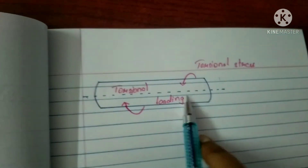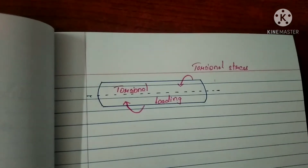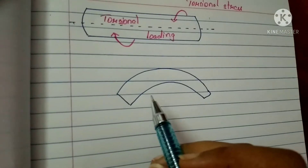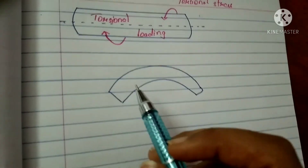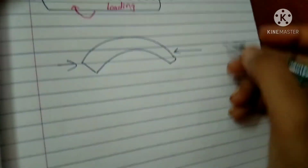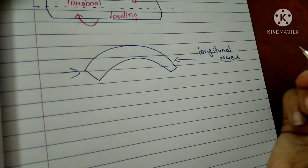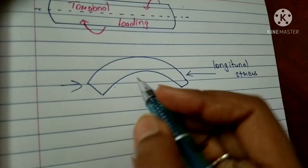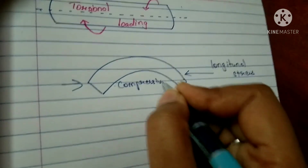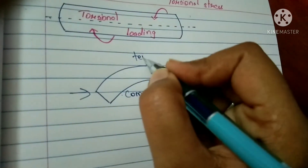When the stress is acting perpendicular to the long axis of the material, it creates torsional loading, and this stress is called torsional stress. Regarding how stress acts on a curved object such as the femur: when a longitudinal stress acts on a curved object, it creates a compressive strain on the concave side and a tensile strain on the convex side.